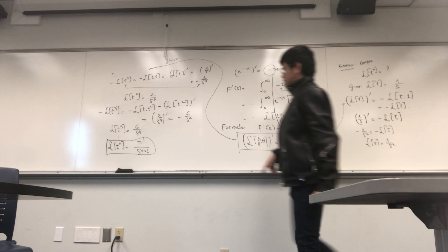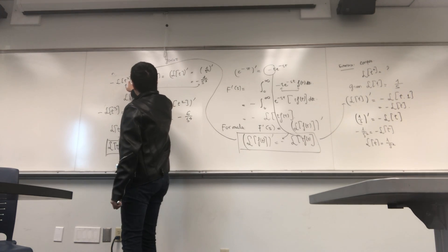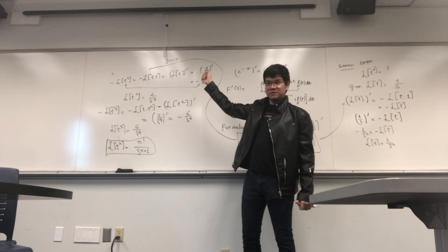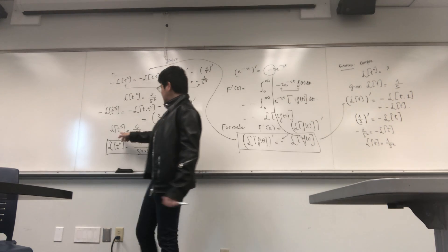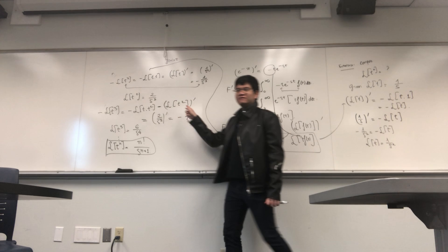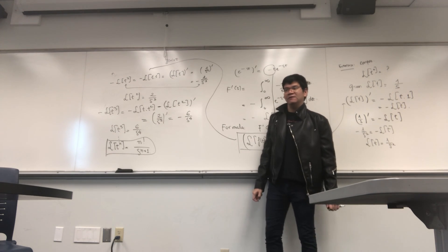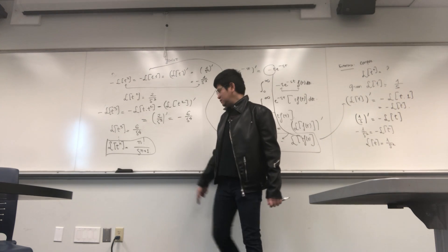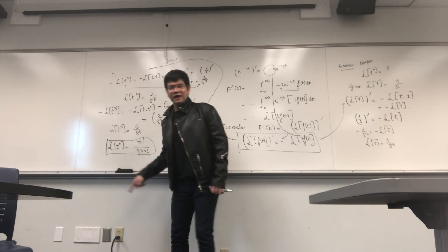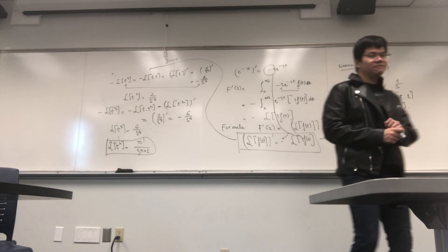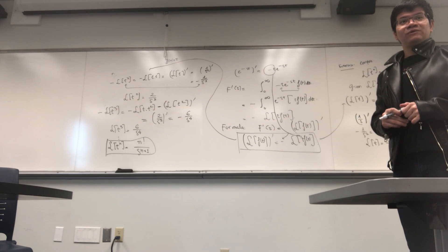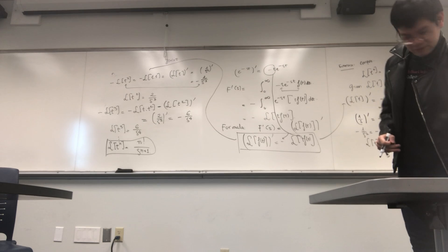To compute L{t²}, take the derivative of L{t}. To compute L{t³}, take the derivative of L{t²}. Repeating this argument, L{t^n} = n factorial over s to the power n+1.